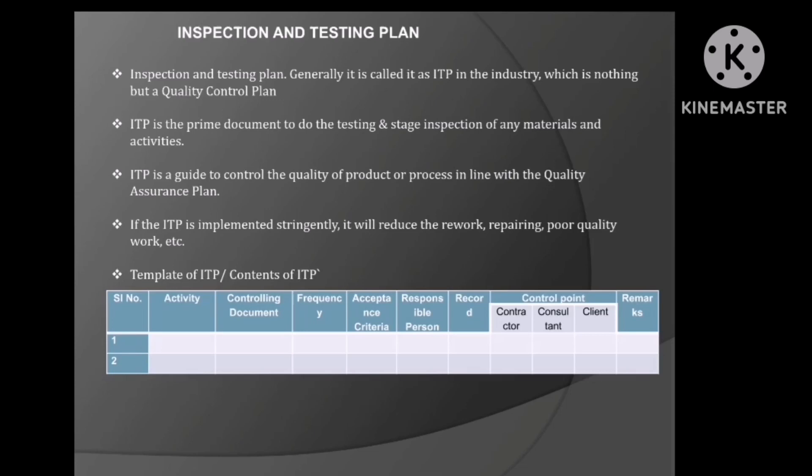The record column mentions what documents will be created during inspection. Then the control points — generally hold point, witness, surveillance points, random inspection, etc. Usually it will be divided into three columns: one is for the contractor, another one is for the consultant, and the last one is for the client. If you have any third-party inspector, you can add them also. If you have any subcontractor, you can add them also.